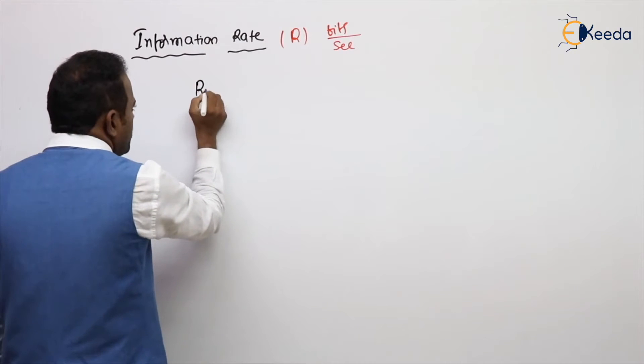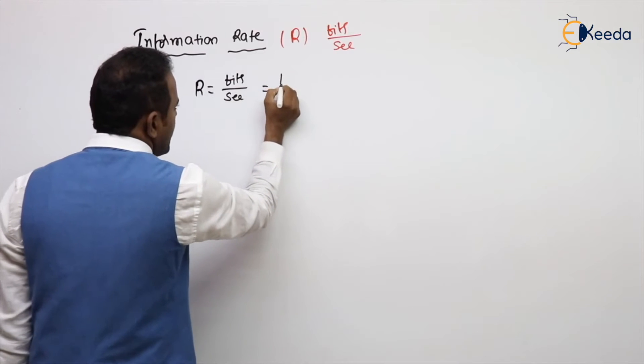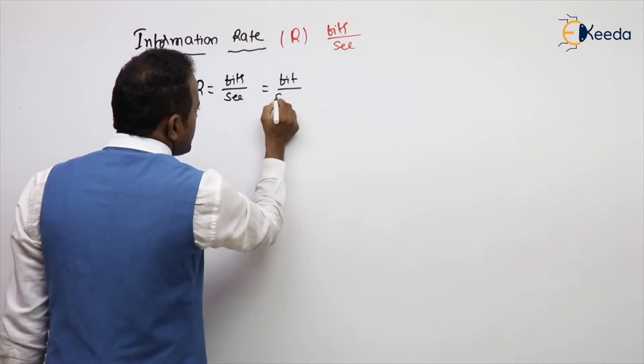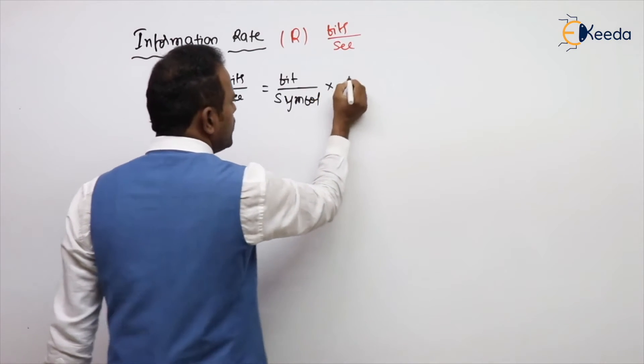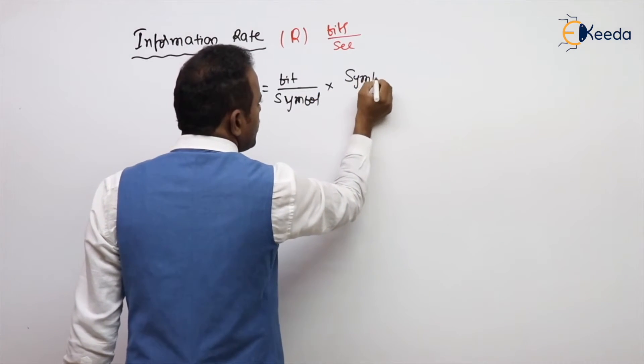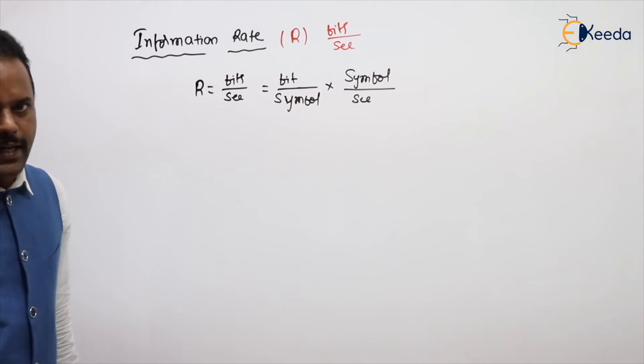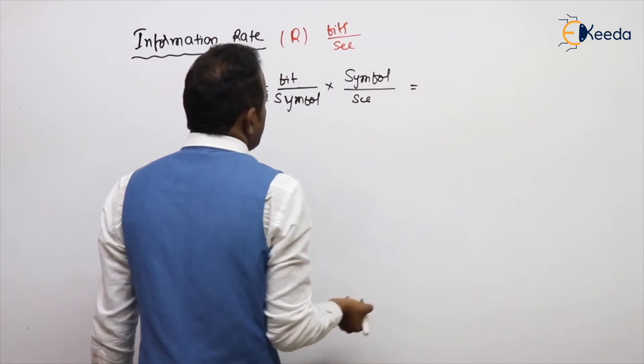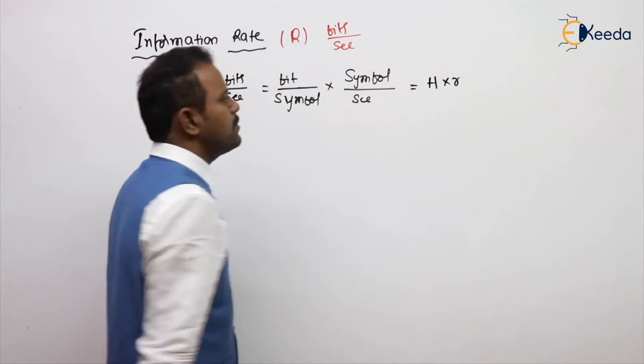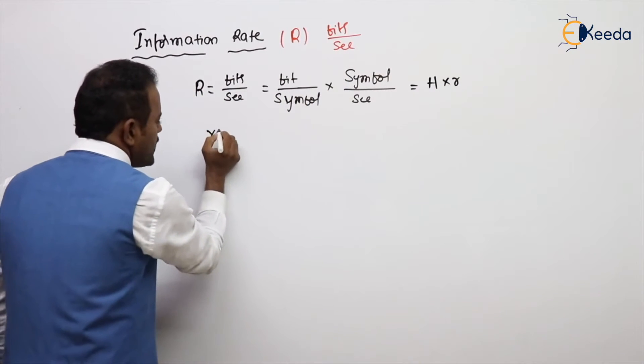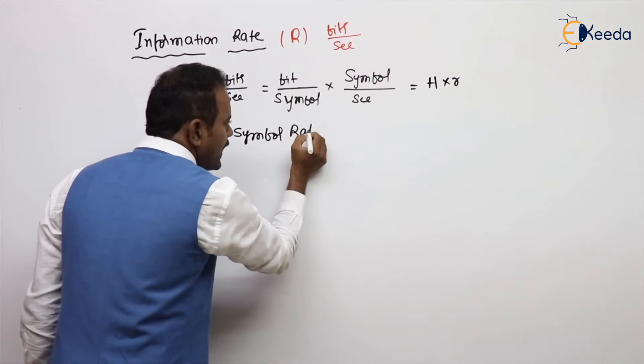R equal to units we got bit per second. Can I write this as bit per symbol or message into symbol per second? Bit per symbol is entropy, symbol per second is symbol rate, where small r is nothing but symbol rate.